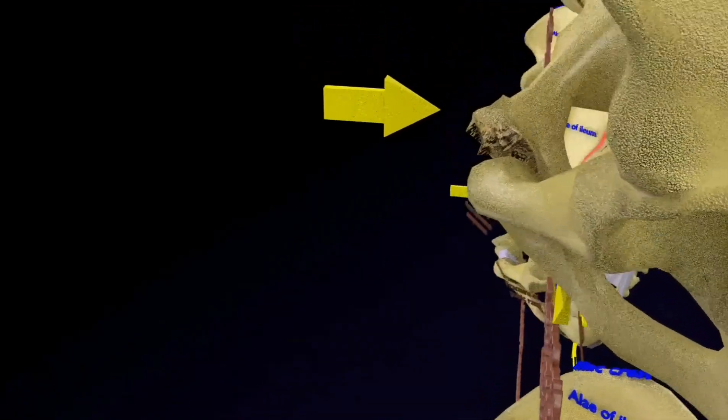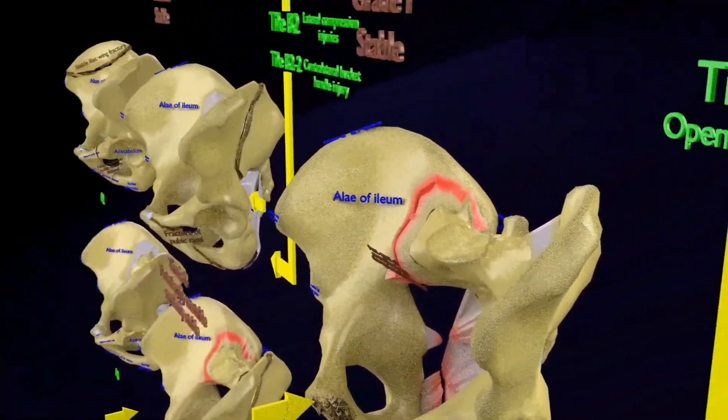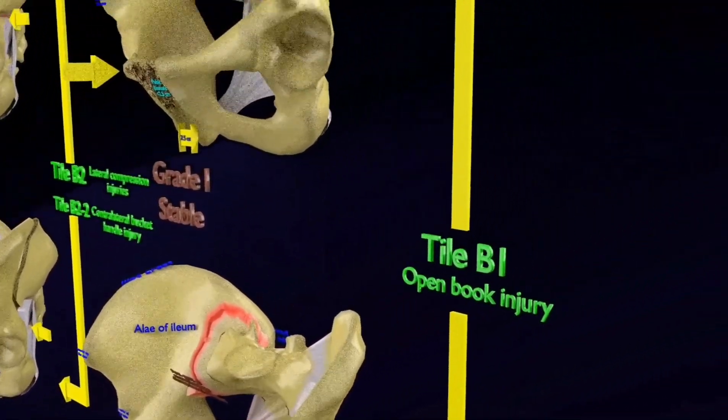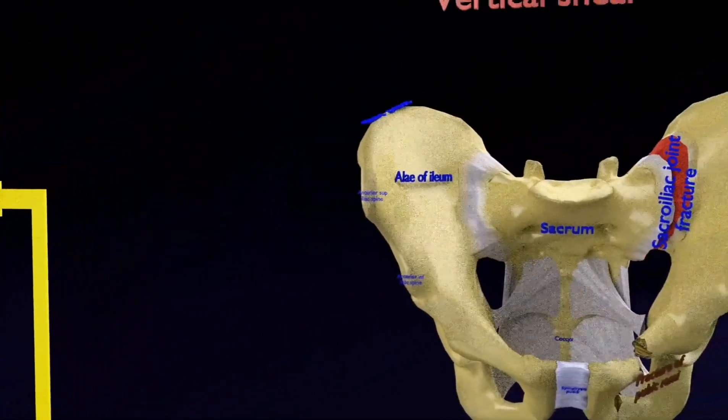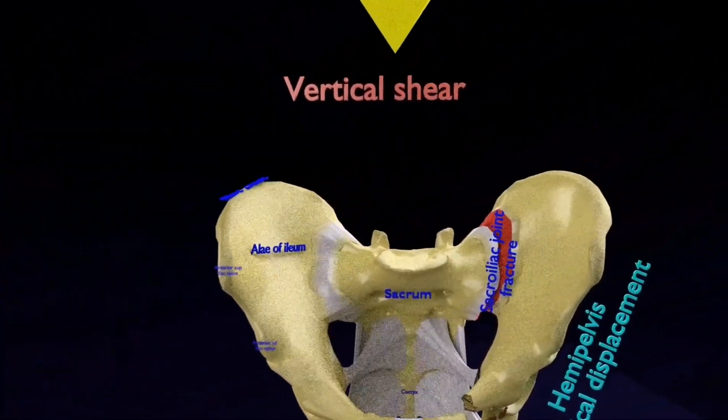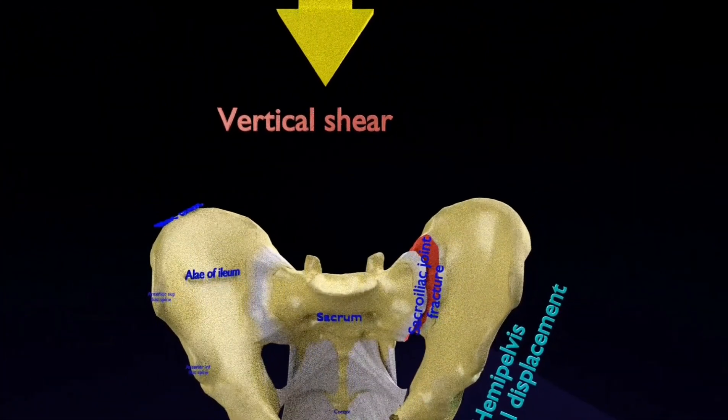It is the most severe and unstable type with a high association of visceral injuries. Its mechanism is high-energy blunt trauma with significant axial loading. Most commonly, a fall or jump from a height with impact onto the lower extremities.